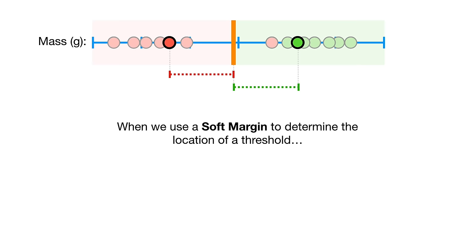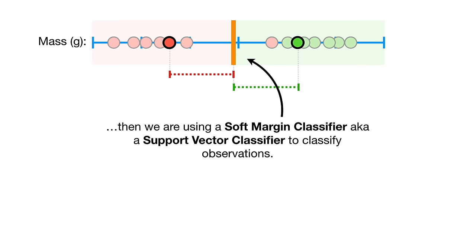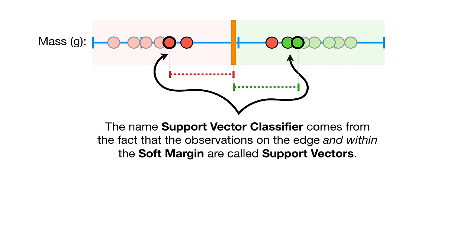When we use a soft margin to determine the location of a threshold, we are using a soft margin classifier — also known as a support vector classifier — to classify observations. The name support vector classifier comes from the fact that the observations on the edge and within the soft margin are called support vectors.